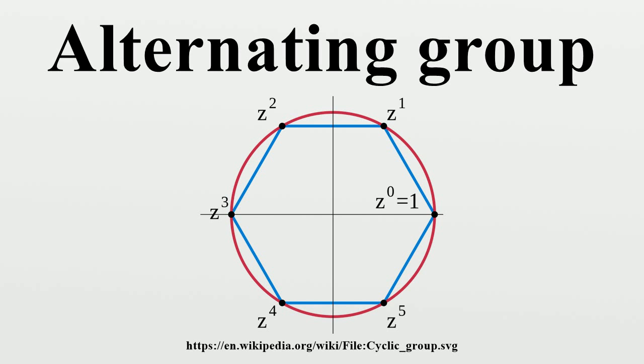So the only non-trivial abelianization maps are to Z3, since order three elements must map to order three elements, and all three cycles are conjugate.